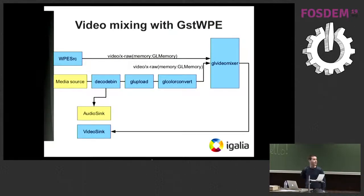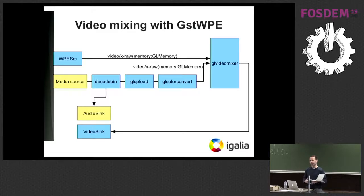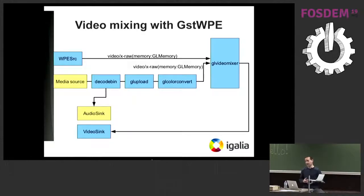A more complex example involves video mixing. On the left you have two source elements: a media source for any kind of media you want to provide to the pipeline, and the WPE source. The media source gets decoded and goes to a GL video mixer, so everything happens in the GPU — there's no download to central memory. The video frames are composed together in the GL video mixer and output to the video sink.